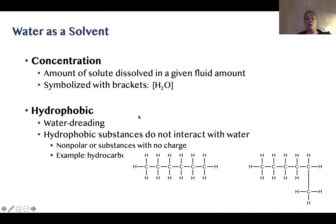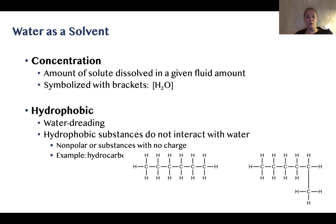When we talk about something dissolved in a solvent forming a solution, we describe how much solute is dissolved in a given amount of fluid — symbolized in brackets to indicate concentration. That concentration might be given as a percent, as grams per liter, or as moles per liter. We don't need to go deeply into molar amounts or Avogadro's number for this class.